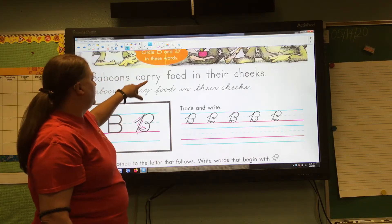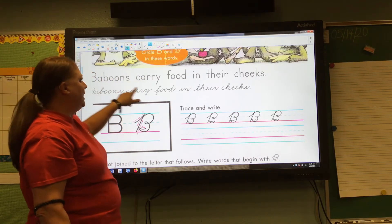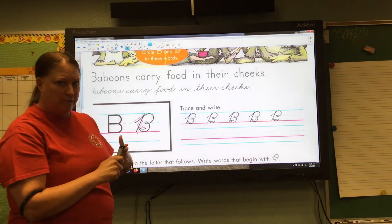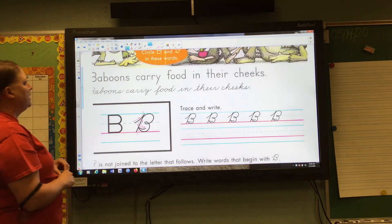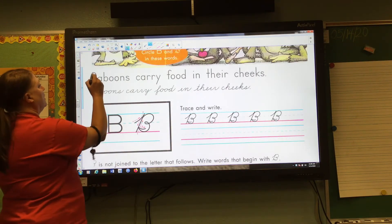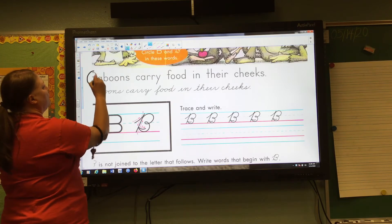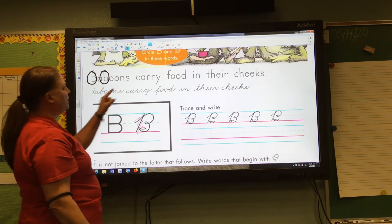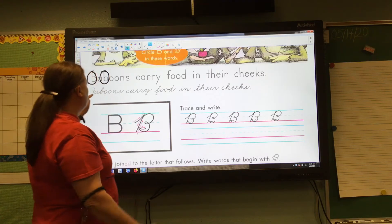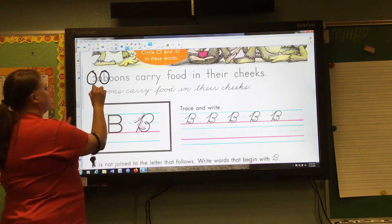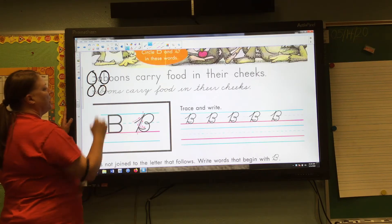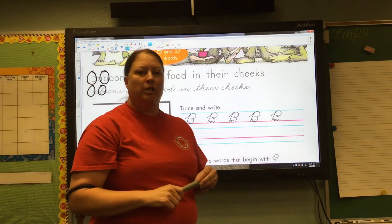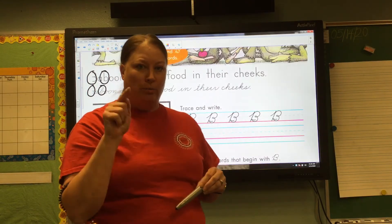Now look at our tongue twister today: 'Baboons carry food in their cheeks.' I would like you to circle any letter B's you see, whether it is manuscript or cursive — see what you can find. I saw a capital B in 'baboons' in manuscript, and a lowercase b. In cursive it's the same letter — capital B, lowercase.